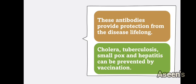These antibodies provide protection from the disease lifelong. Once the vaccine is taken, the antibodies produced stay inside your body permanently. Cholera, tuberculosis, smallpox, and hepatitis B can be prevented by vaccination. This is why nowadays you don't hear much about these diseases — most people are vaccinated and their bodies are fighting against them.